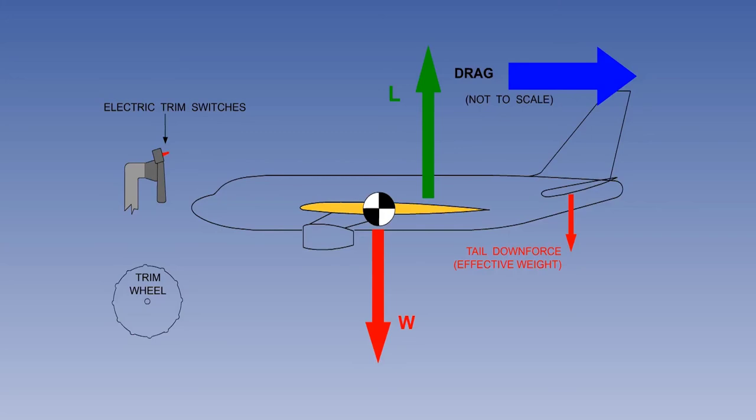We have seen that the variable incidence trimming tailplane gives less trim drag than the trim tab. Now we will consider the benefit from moving the aircraft CG in flight. In this case, we need to move the CG rearwards. This is done by pumping fuel from the wing tanks to a trim tank at the rear of the aeroplane, usually fitted inside the fin or the tailplane.